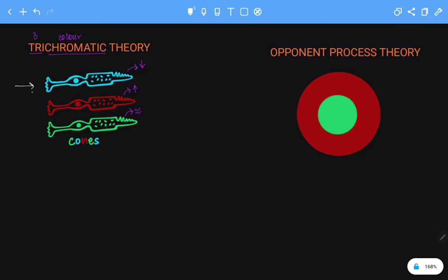So here we have wavelengths entering the eye, and they are going to stimulate the three cones. Based on the wavelength that is coming and stimulating the cones, there will be a varying degree of stimulation in the three cones.